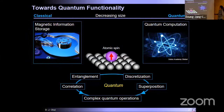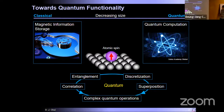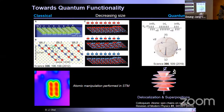When we are decreasing the size of an object, we can go from the classical limit to the quantum limit. In the classical limit, we can store memory in MRAM devices. When going into the quantum limit, we can use qubits to do quantum computation, exploiting quantum properties such as entanglement, correlations, discretization, or superposition to do complex quantum operations. Atomic spins are very interesting because they are fundamentally quantum.